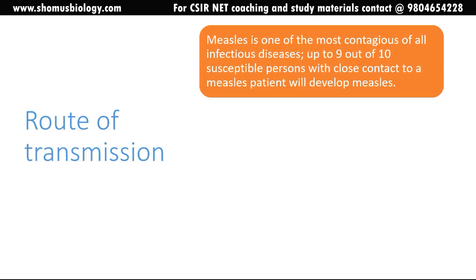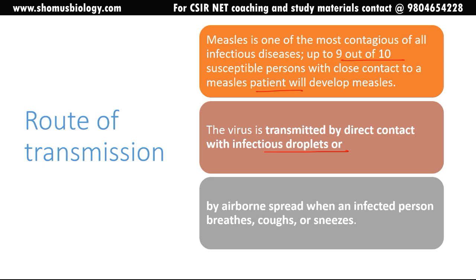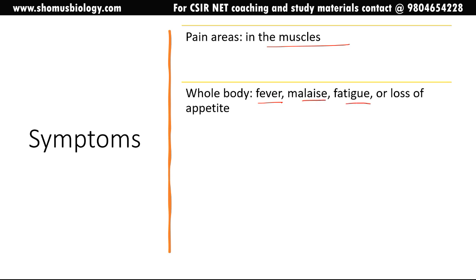Measles is one of the most contagious of all infectious diseases — up to nine out of ten susceptible persons with close contact to a measles patient will develop measles. The virus is transmitted by direct contact with infectious droplets or by airborne spread through breaths, coughs, and sneezes. Symptoms include muscle pain, fever, malaise, fatigue, loss of appetite, and a characteristic red blotchy skin rash — the typical identifying marker for this infection.